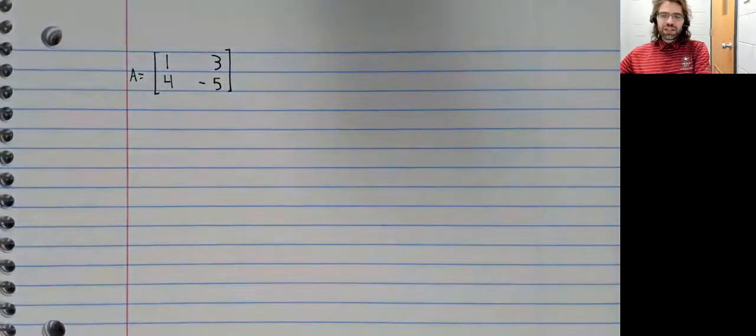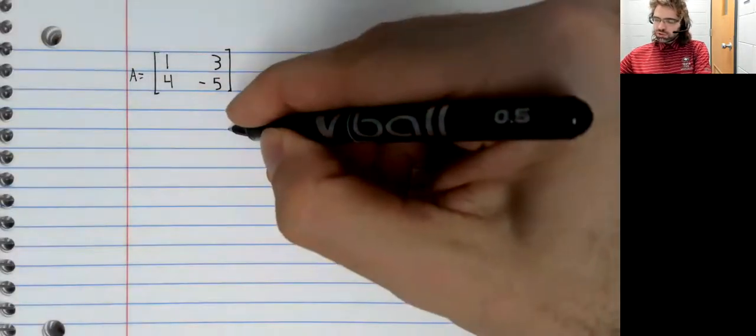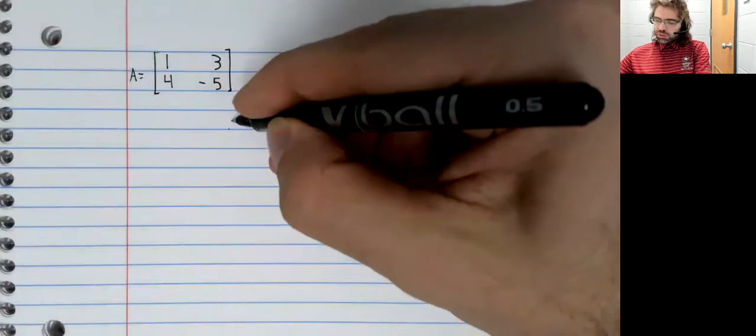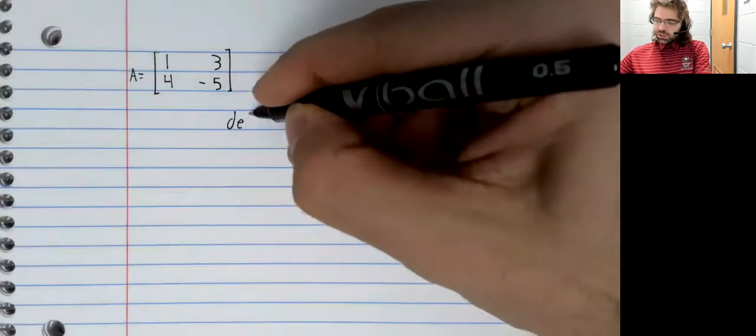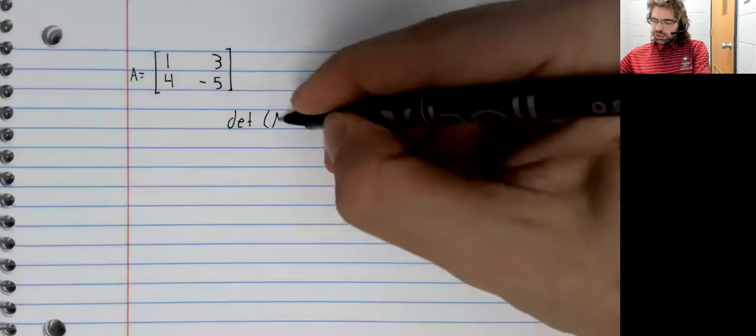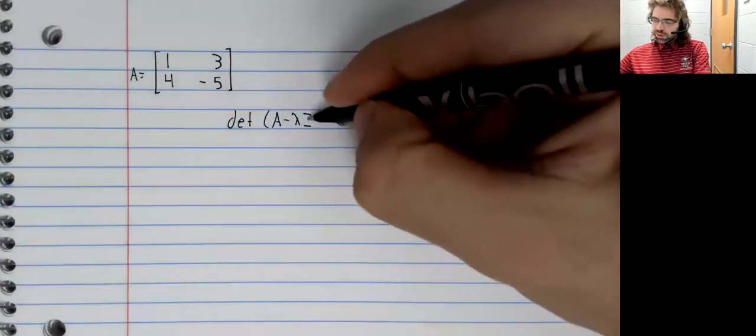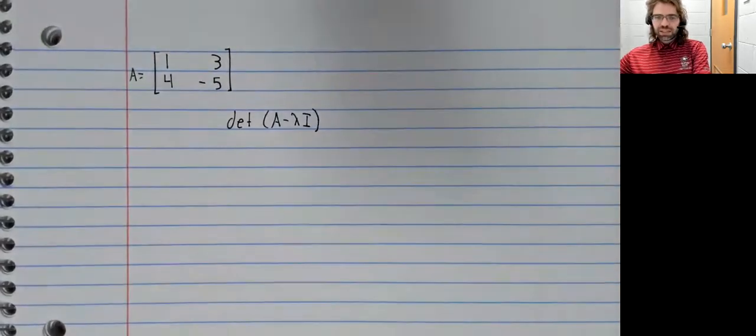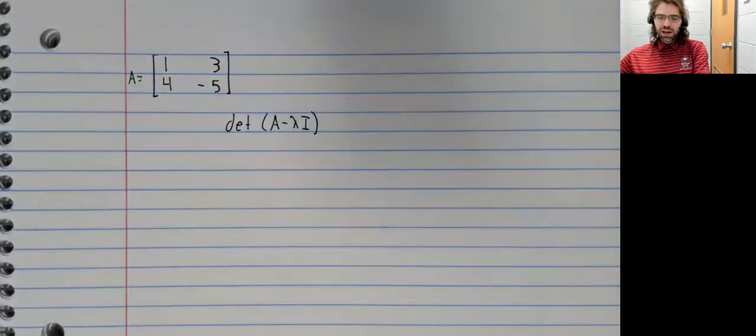To find the eigenvalues, we'll find the characteristic polynomial and then we'll find its roots. So we want the characteristic polynomial, the determinant of A minus lambda I.